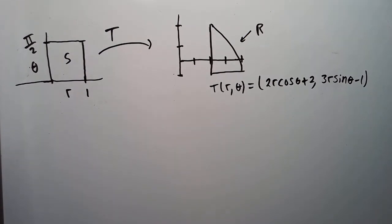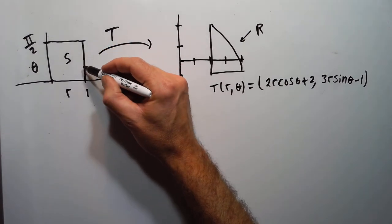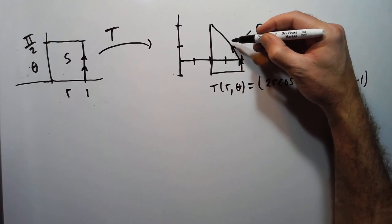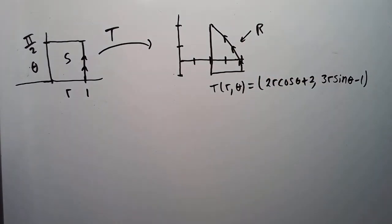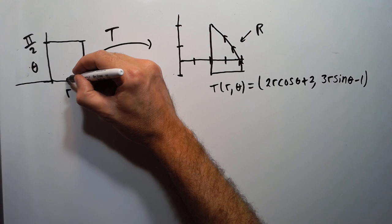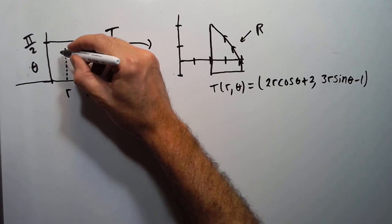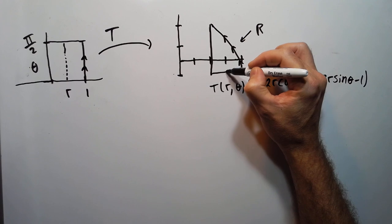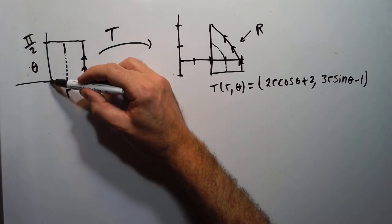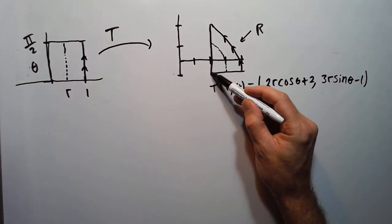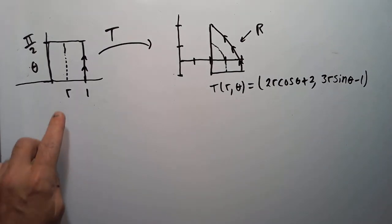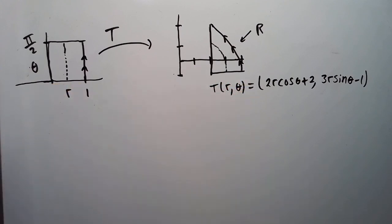For example, going along the boundary where r = 1 maps to the ellipse arc. A curve in the middle of the region maps to an interior ellipse, and a point at one edge maps to a single point. So the transformation T maps this rectangle S into our region R.